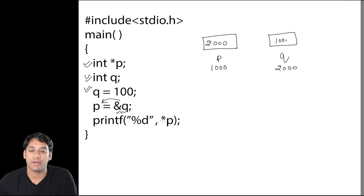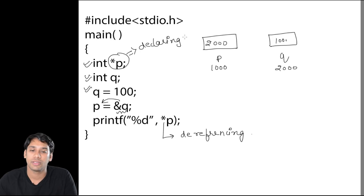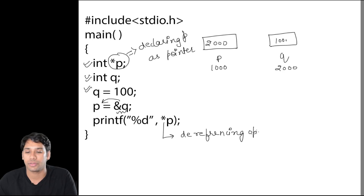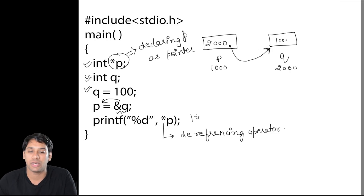In the next line we do printf("%d", *p). Here the star is acting as a dereferencing operator. When we write int *p in a declaration, the star is declaring p as a pointer. But in the printf statement, the star acts as a dereferencing operator — meaning p is pointing to location 2000, and using star we go to location 2000 and find the value stored there, which is 100. Therefore this will print 100.